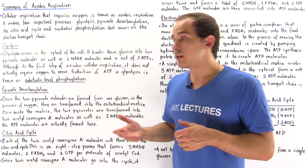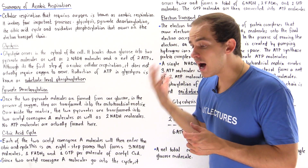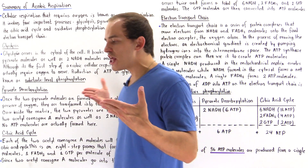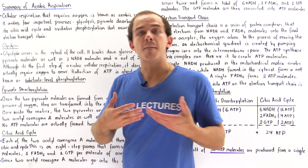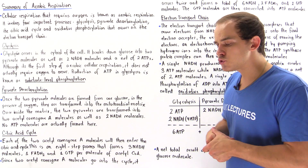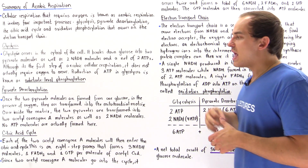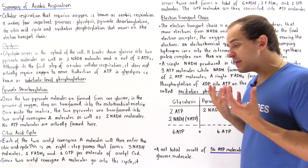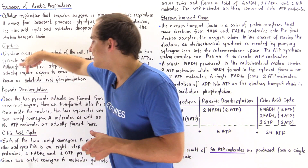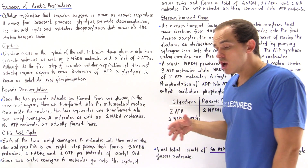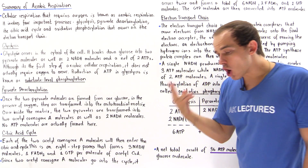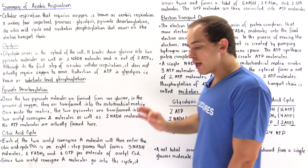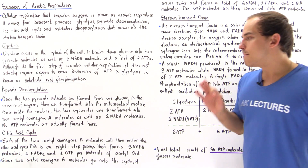Once we synthesize two pyruvate molecules via glycolysis, if oxygen is present in the cell, those two pyruvate molecules are transported into the mitochondrial matrix of the mitochondria. Once inside the mitochondrial matrix, the two pyruvate molecules undergo a decarboxylation process in which we produce two carbon dioxide molecules, two NADH molecules, and two acetyl coenzyme A molecules.